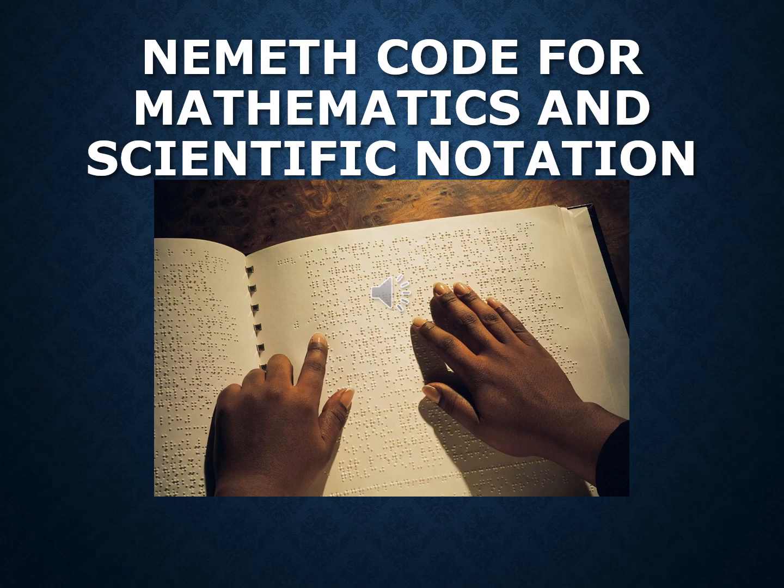Now let's shift gears and talk about the Nemeth code. Nemeth is a specialized code for writing and reading mathematics and science in Braille. It was originally structured with surrounding non-technical text written in English Braille American Edition, EBAE. The implementation of UEB required a shift in how surrounding non-technical text is written with Nemeth, because EBAE is no longer one of the official codes. BANA developed guidelines for use of the Nemeth code embedded within UEB text, and code-switching indicators are employed to prevent ambiguity or conflict between UEB and Nemeth symbols. This allows surrounding text to be in UEB while the technical content itself is transcribed in Nemeth — in other words, Nemeth code is used within UEB contexts.